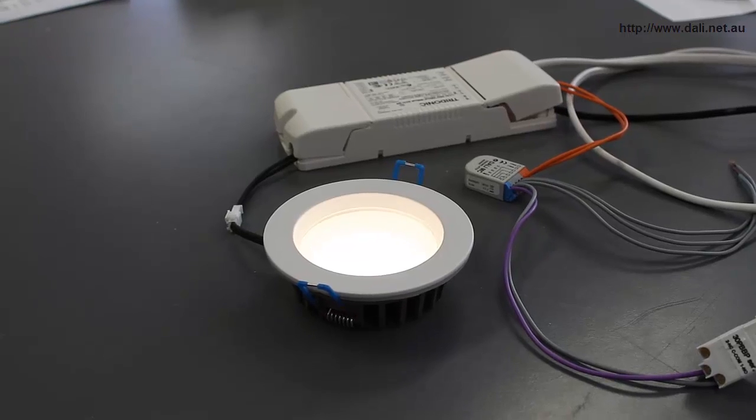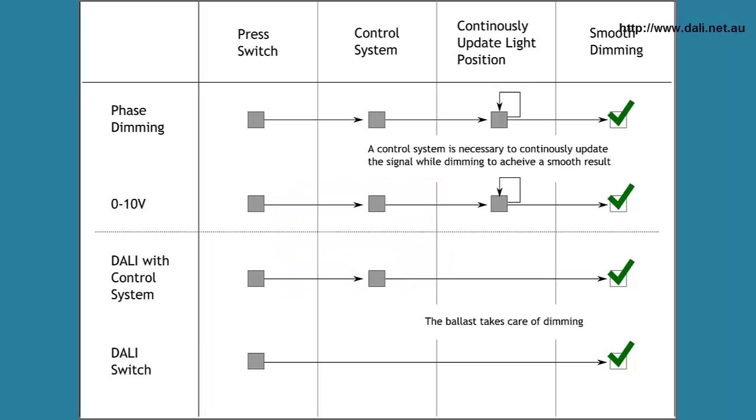This may seem obvious, however with other systems, take phase dimming or 0-10V for example, you need a control system that is required to track where lights are at all times in order to calculate a dimming curve and then process the control signal to dim the lights up and down smoothly.